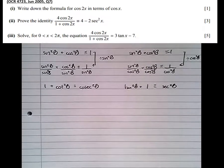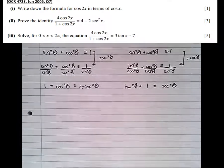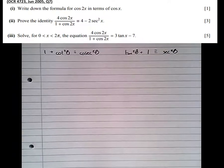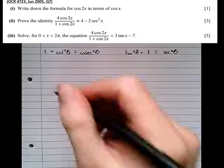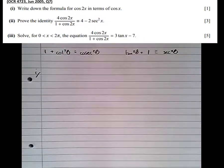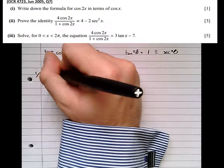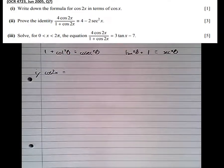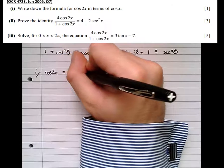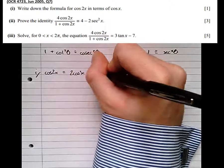So let's have a look at this exam question, which puts into context what we've just learned. So there's the two new trig identities we've learned. So first of all, part 1, write down a formula for cos 2x in terms of cos x. Cos 2x in terms of cos x, well, you just simply need to learn this. It's 2 cos squared x minus 1.